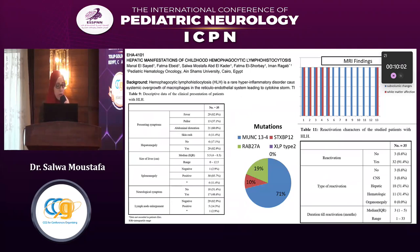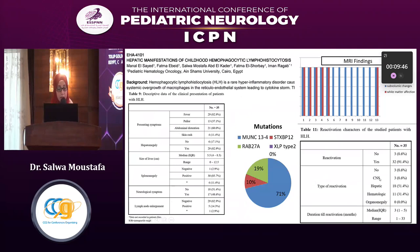Another cohort reported that familial HLH type 3 with MUNX-13 mutation has an increased incidence of CNS-HLH and isolated CNS-HLH. In a retrospective cohort from our clinic, among 35 patients with suspected primary or familial HLH, 50% initially presented with neurological manifestations, 8.6% were reactivated with CNS only, and 70% of that group showed MUNX-13 mutation.